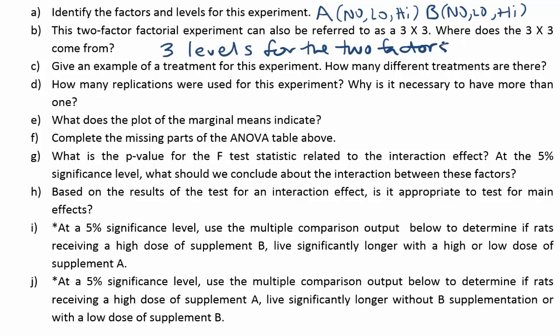Give an example of a treatment for this experiment. How many different treatments are there? An example of a treatment is pretty straightforward. You could have, for example, no A and no B. That would actually be a treatment in this study - a rat that gets neither of the two supplements. And then, of course, there would be no A and low B and no A and high B, so on and so forth. How many different combinations like that can you create? Basically nine. That's where the three-by-three comes in. Three times three is nine. There are nine different possible treatments.